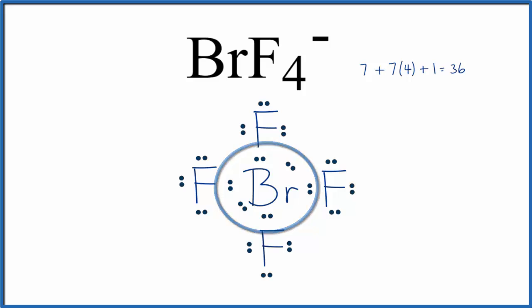If we check the formal charges for each of these atoms, we'd find they're very close to 0, except the Bromine has a -1 formal charge. We'd expect that because of the negative charge on the ion.